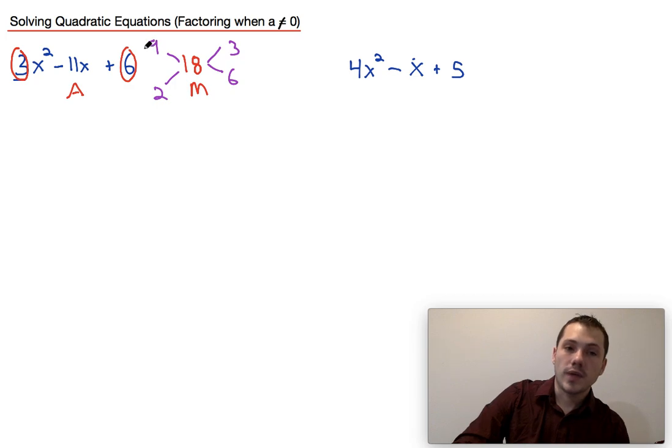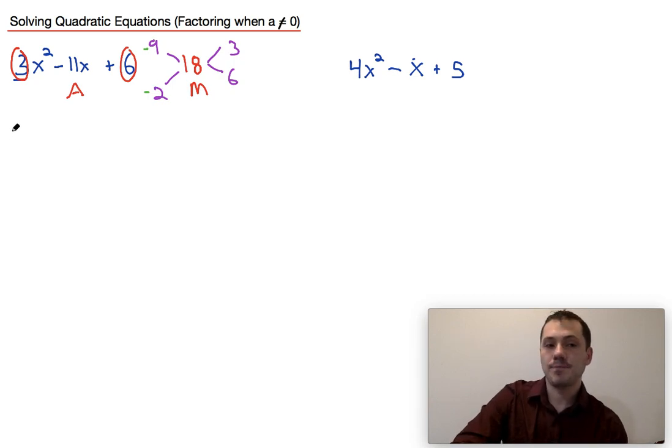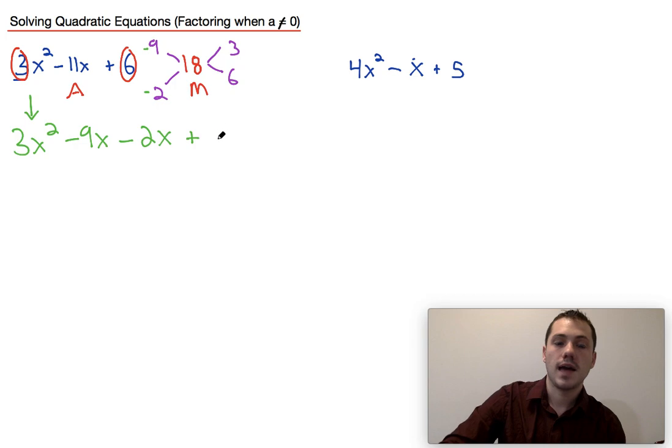So now that I know that the factors that I'm interested in are this negative 9 and this negative 2, what you have to do is split this middle term into negative 9x and negative 2x. So the way that we do that is we write our original first term, this 3x squared, still is 3x squared, and then when we come to this b value, this negative 11x, I'm going to split it into minus 9x and minus 2x, the two factors that we took from the previous problem, and we're simply going to add 6 at the end.